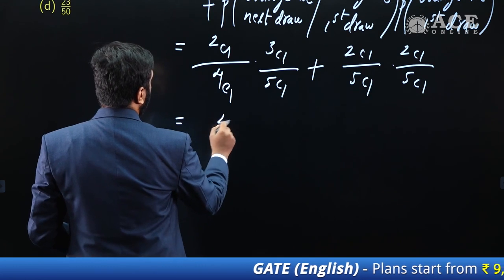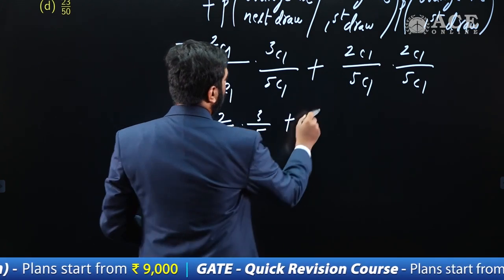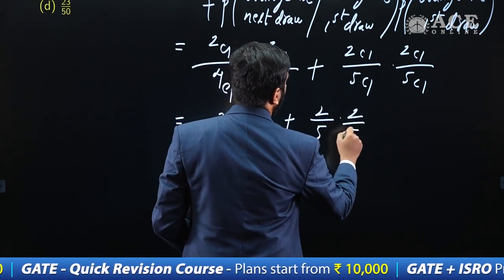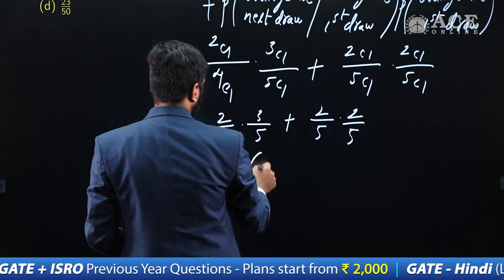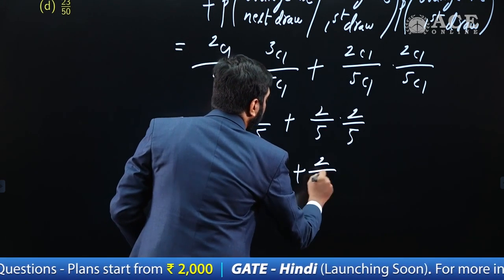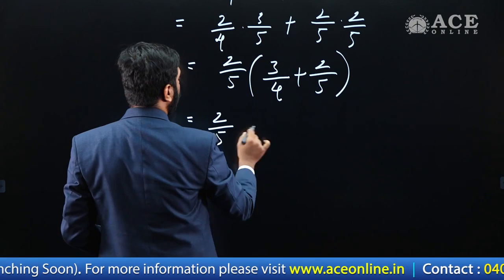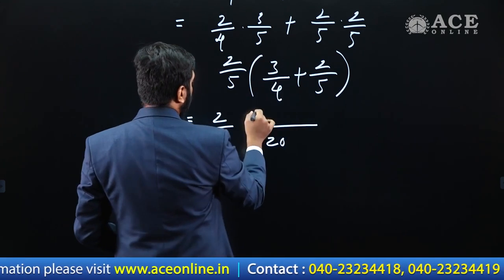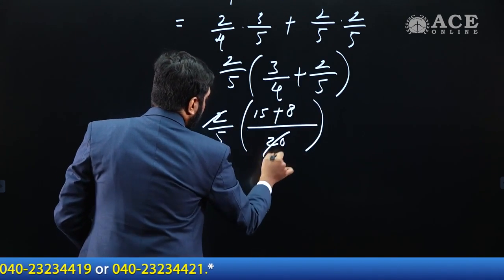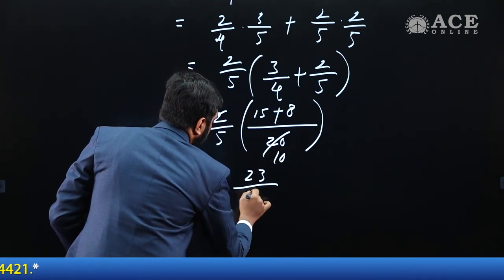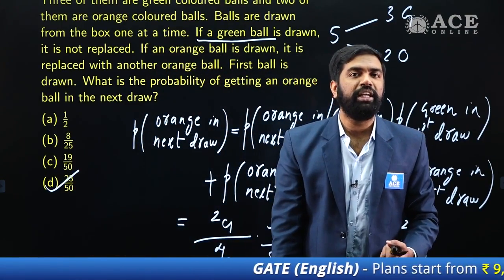Simplifying: (2/4)×(3/5) + (2/5)×(2/5) = (2/5) × [3/4 + 2/5]. Taking LCM 20 for the bracket: (15 + 8)/20 = 23/20. So the total is (2/5) × (23/20) = 46/100 = 23/50. Do we have option 23/50? Yes. The answer is 23/50.